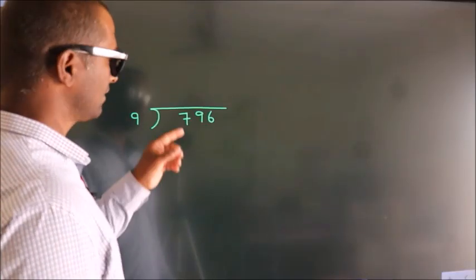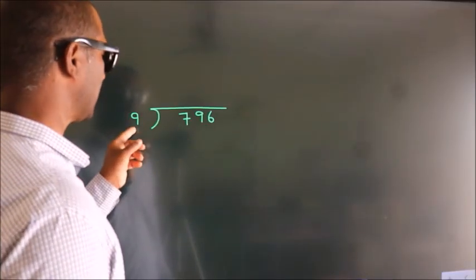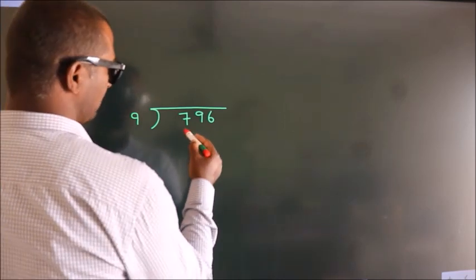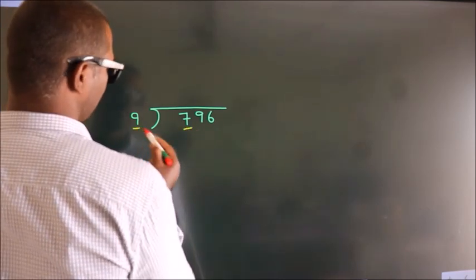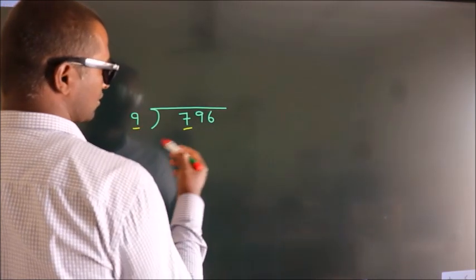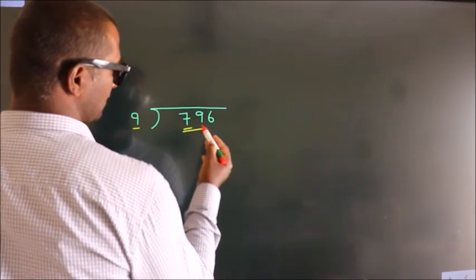How to divide 796 by 9? See, here we have 7, here 9. 7 is smaller than 9, so we should take two numbers: 79.